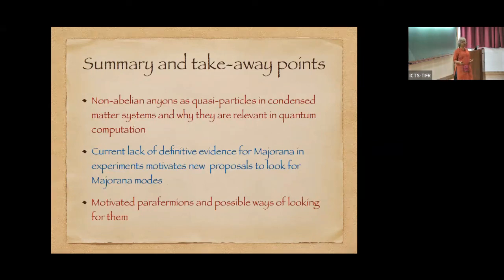So to summarize, what I have tried to do here is give a brief introduction to the field of non-abelian anyons as quasiparticles in condensed matter systems, and briefly explain why they are relevant in quantum computation. I have said that the current lack of definitive evidence for Majoranas in experiments motivates new proposals to look for Majoranas, and I have also motivated parafermions and possible ways of looking for them. Thanks.